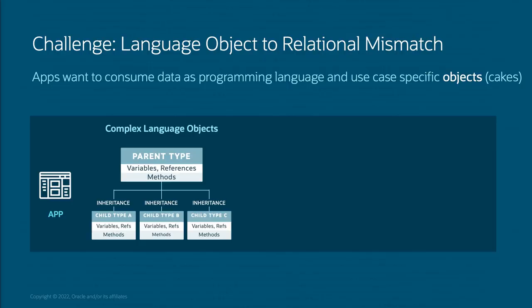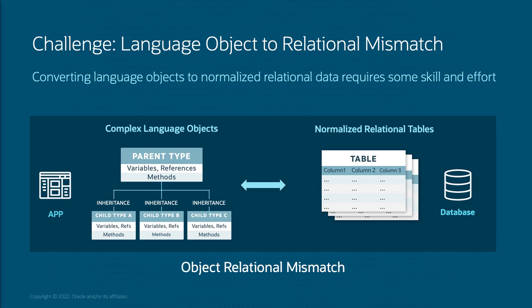Applications want to consume data as programming language and use case specific objects — think of those as cakes, the final product. In an application, the data looks like a complex object type with variables, references, methods, and usually a class hierarchy. In a relational database, the data looks very different — it's tables with rows and columns, very flat. That's called the object-relational mismatch, and developers have to bridge that gap to get their language data into the database.